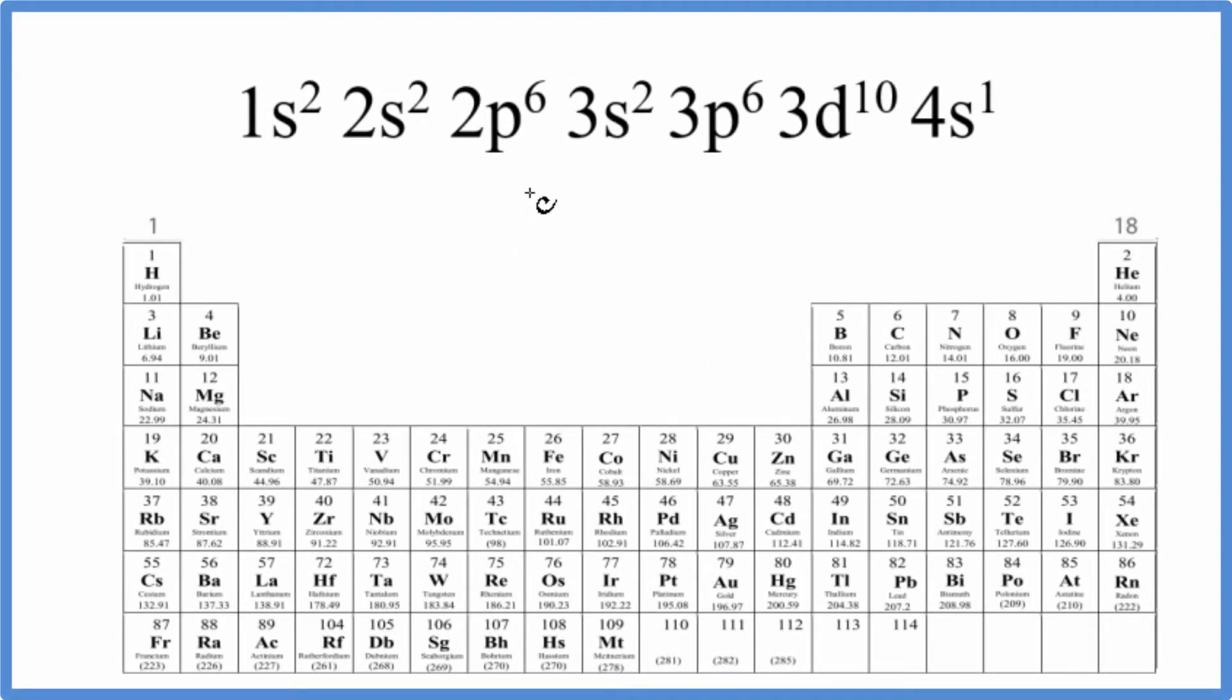So there are two main ways we can figure out which element here on the periodic table is represented by this electron configuration that ends in 3d¹⁰ 4s¹.